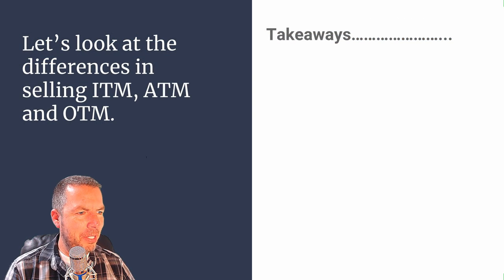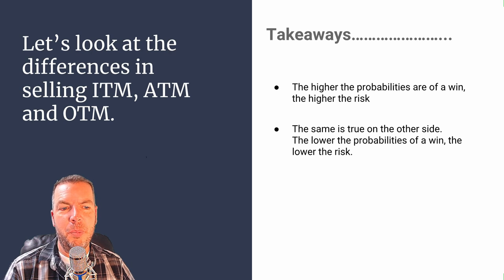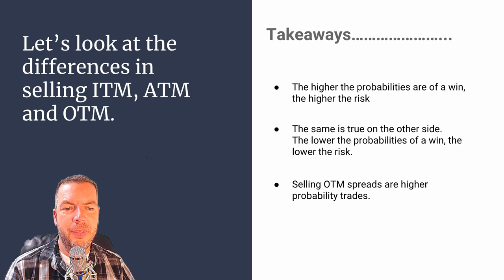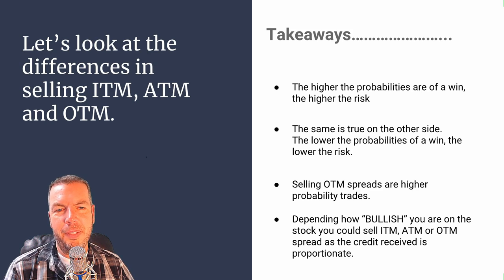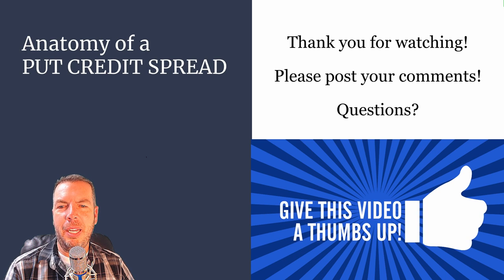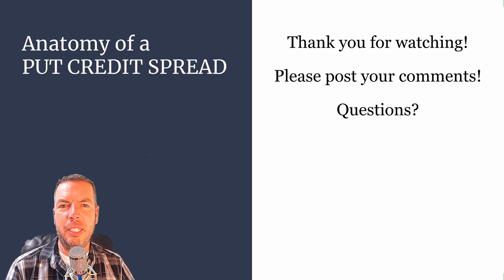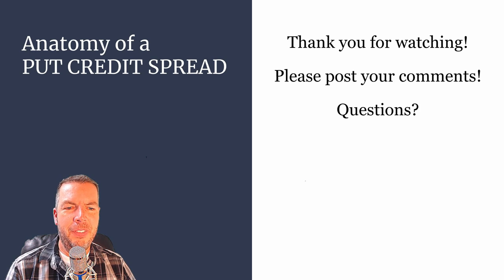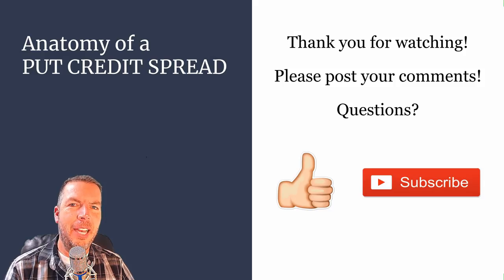Some takeaways: the higher the probabilities of a win, the higher the risk. The lower the probabilities of a win, the lower the risk. Selling out-of-the-money spreads are higher probability trades. Depending on how bullish you are, you could sell in the money, at the money, or out of the money, as the credit received is proportionate. This video was sparked by a viewer — Richard, this one's for you. Thank you so much for watching. If this video has been helpful, please give us a thumbs up, give us a like, and if you haven't already, consider subscribing. My name's Kirk with Tactical Options Trading — have a good one, catch you on the next one.